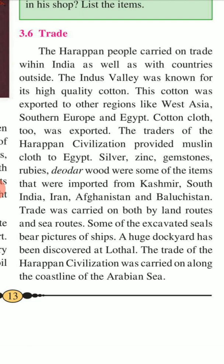The Indus world was known for its high-quality cotton. Cotton was exported to other regions like West Asia, Southern Europe, and Egypt. Cotton cloth was also exported. The traders of the Harappan civilization provided carnelian and lapis lazuli to Egypt.